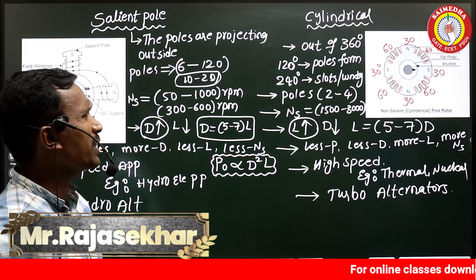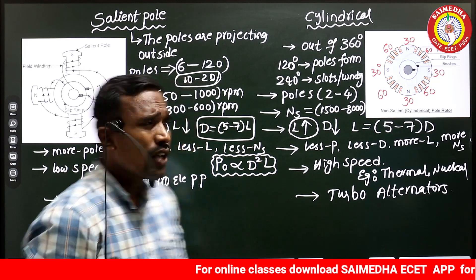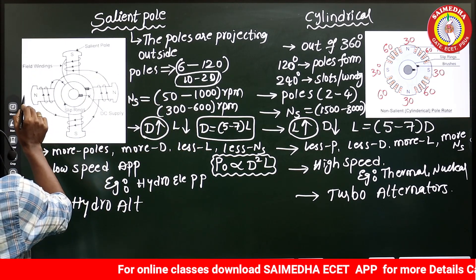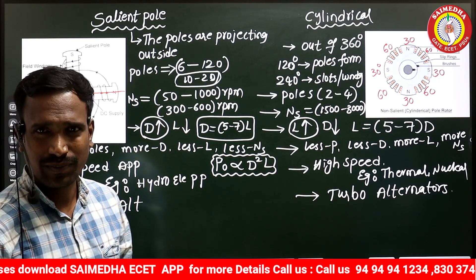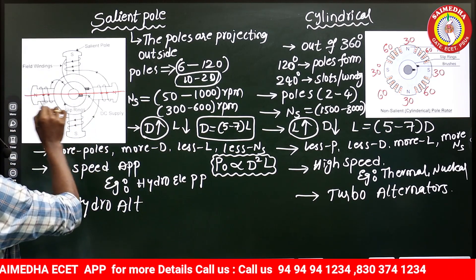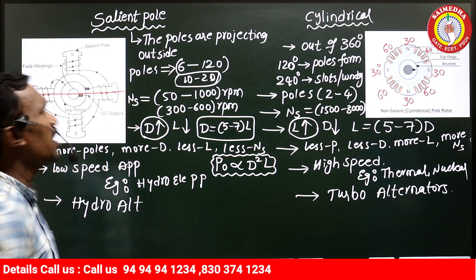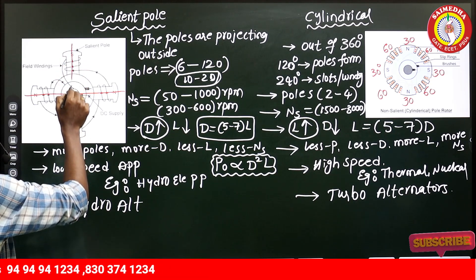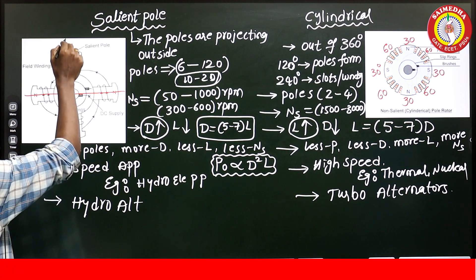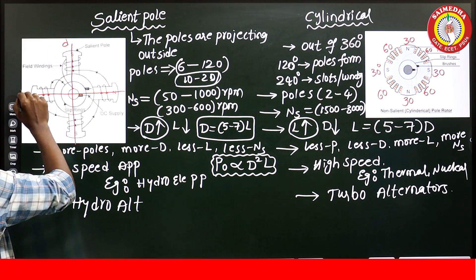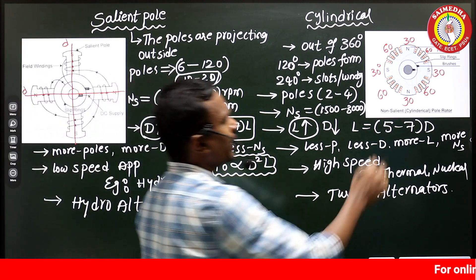Can you tell me which is the d-axis and which is the q-axis? Generally, the d-axis is nothing but the axis flowing through the pole centers. This axis here is the d-axis, and this axis is also called the d-axis.